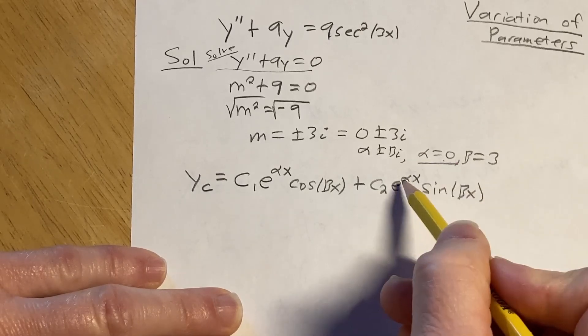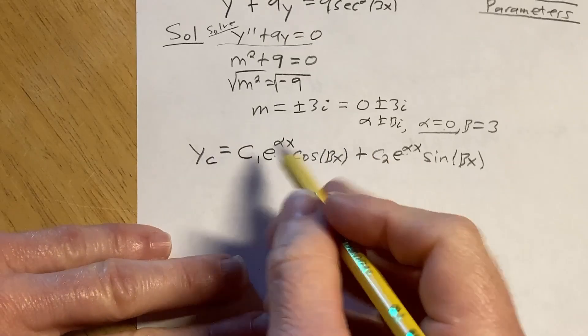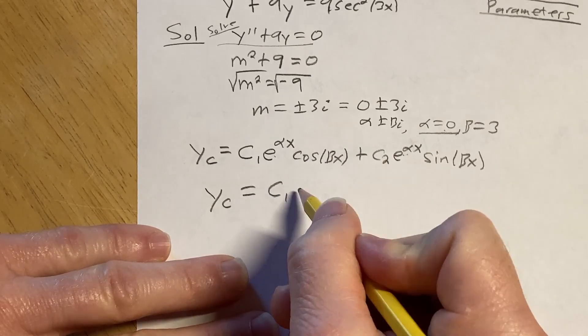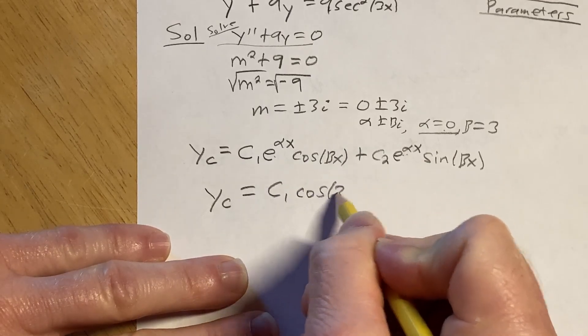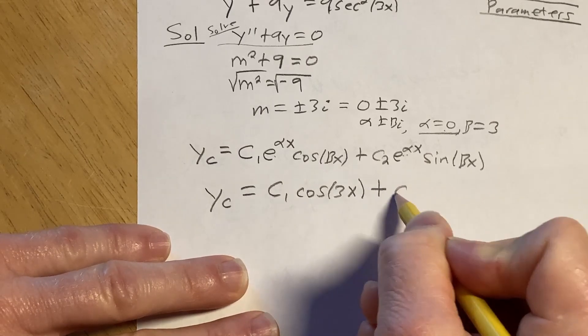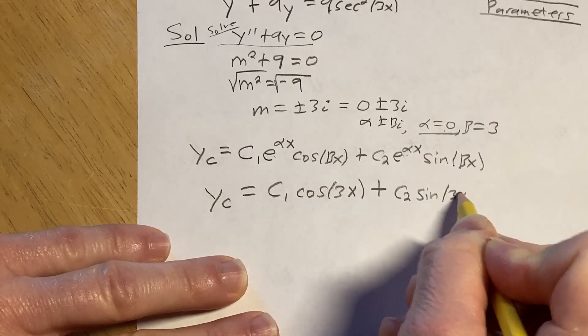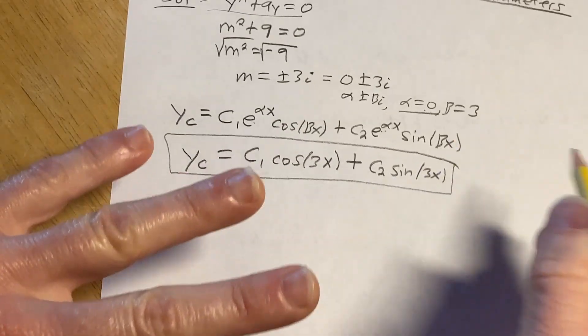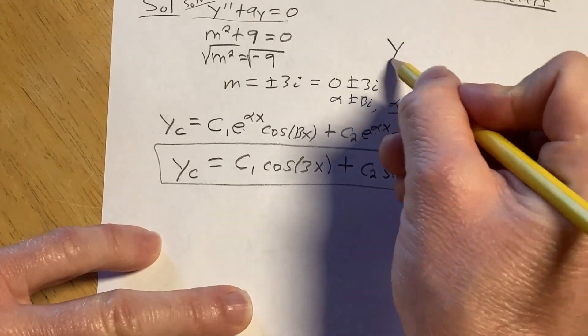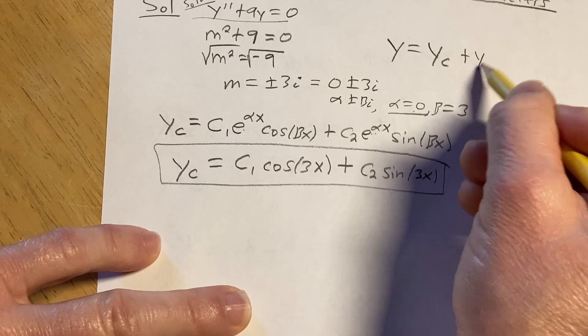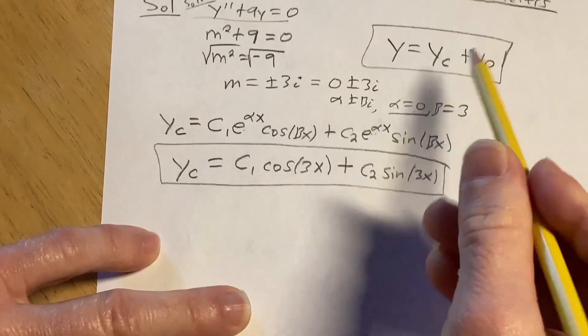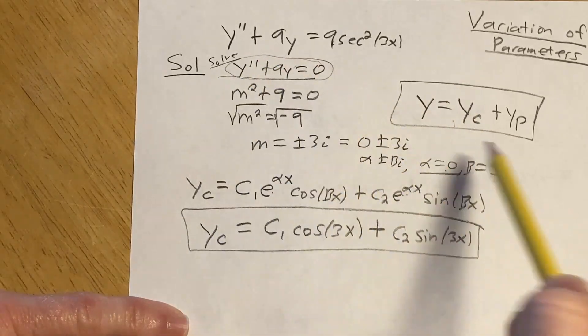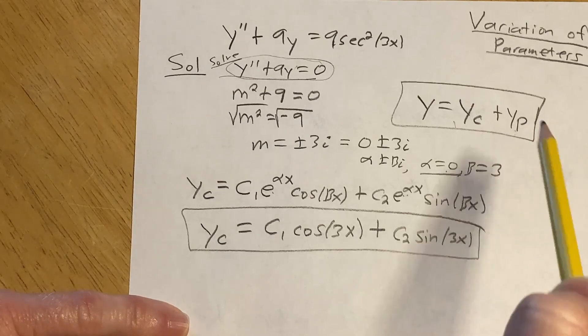It's c sub 1 e to the alpha x cosine beta x plus c sub 2 e to the alpha x sine beta x. Alpha is zero. So these e to the zeros, they're going to be one. So y sub c is going to be c sub 1 cosine 3x plus c sub 2 sine 3x. This is called the complementary function. Technically, we're halfway done, but we still have a long way to go.